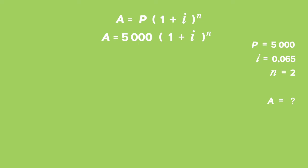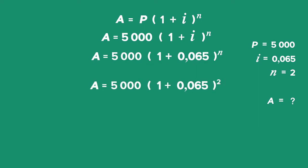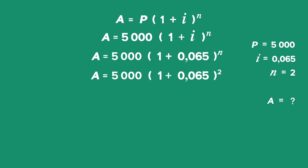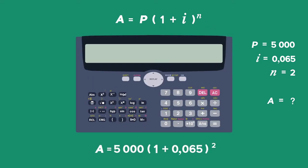So we can simply work out the accumulated amount. Our interest rate is 0.065 and the whole bracket is raised to the power of 2. Now, what you need to do is put this entire step into your calculator in one motion and only round off at the end.